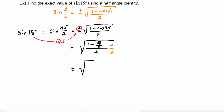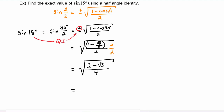We distribute the two in the numerator: two times one equals two, and two times radical three over two equals radical three. In the denominator we have two times two, which is four. We can simplify the square root of four, so that denominator becomes two, and in the numerator we have radical two minus radical three.